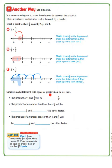Complete each statement: The product of 1 and 3 fourths is equal to 3 fourths, because multiplying by 1 keeps the factor the same — for example, 1 times 3 equals 3. The product of a number less than 1 and 3 fourths will be less than 3 fourths and also less than the other factor. The product of a number greater than 1 and 3 fourths will be greater than 3 fourths but less than the other factor.